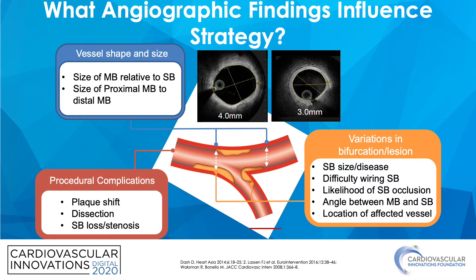So what angiographic findings influence our strategy? The vessel size and shape are important, particularly the size of the main branch relative to the side branch, and the size of the proximal portion of the main branch to the distal portion. Procedural complications can also impact decision making, including plaque shift, dissection, or loss of stenosis of a side branch. Variations in bifurcation disease are also important, such as the side branch size and disease, difficulty of wiring the side branch, likelihood of side branch occlusion while stenting across it, and the angle between the main branch and the side branch.